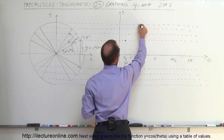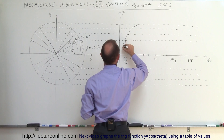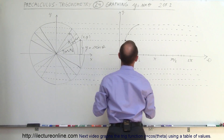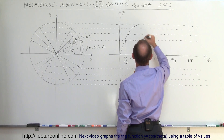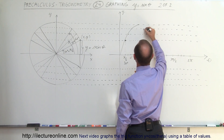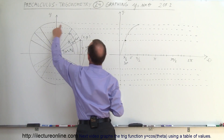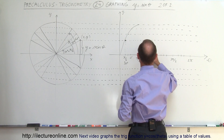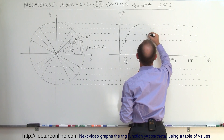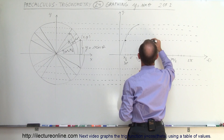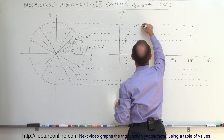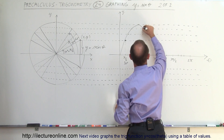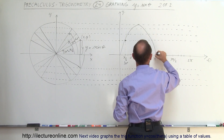The first portion of the graph looks like this when we connect all the points. Continuing, at 120 degrees we're back to this point, which corresponds to this point on the graph. At 135 degrees we're at this point, at 150 degrees we're at this point, and then we're back to zero. So you can see that our graph looks like that.